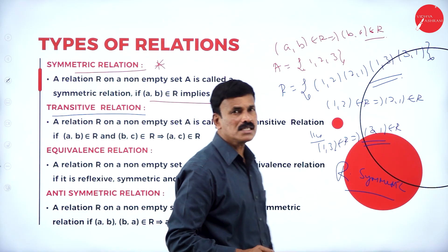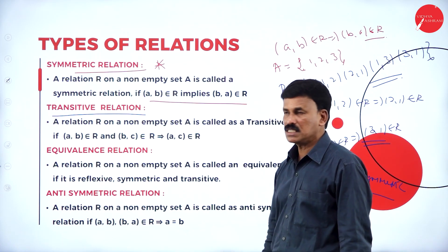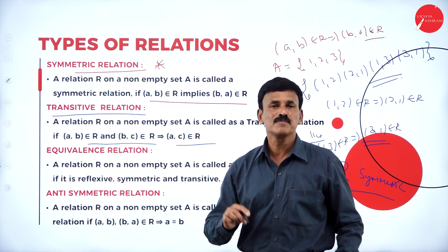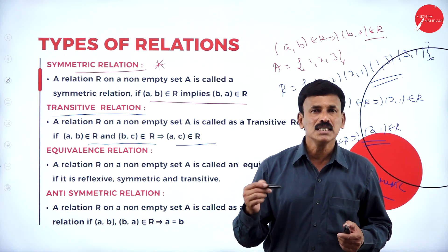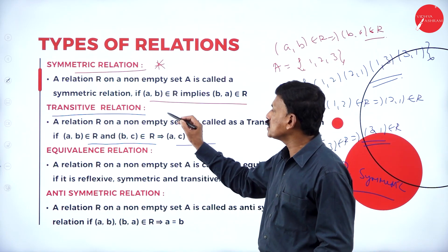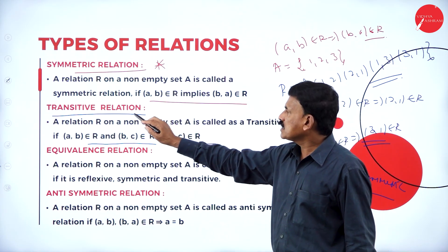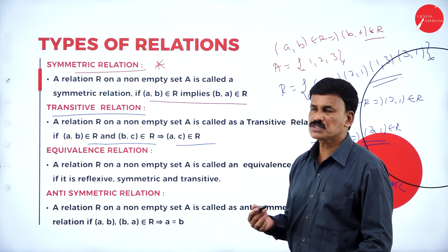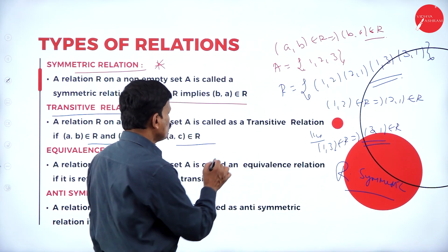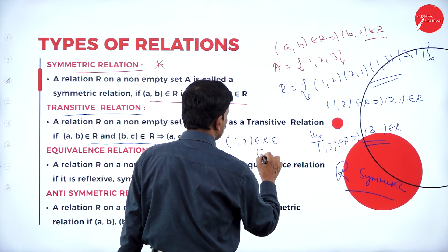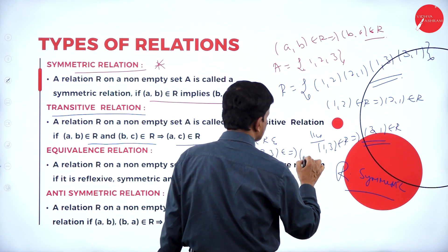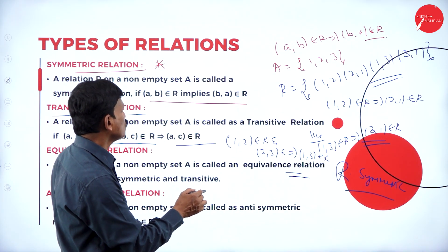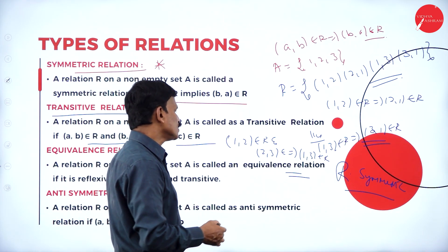The third type of relation is the transitive relation. On a non-empty set A, if A, B, C are any three elements, then if (a, b) belongs to R and (b, c) belongs to R implies (a, c) also belongs to R, such a relation is called a transitive relation. For example, if (1,2) belongs to R and (2,3) belongs to R implies (1,3) also belongs to R, then R is called a transitive relation.